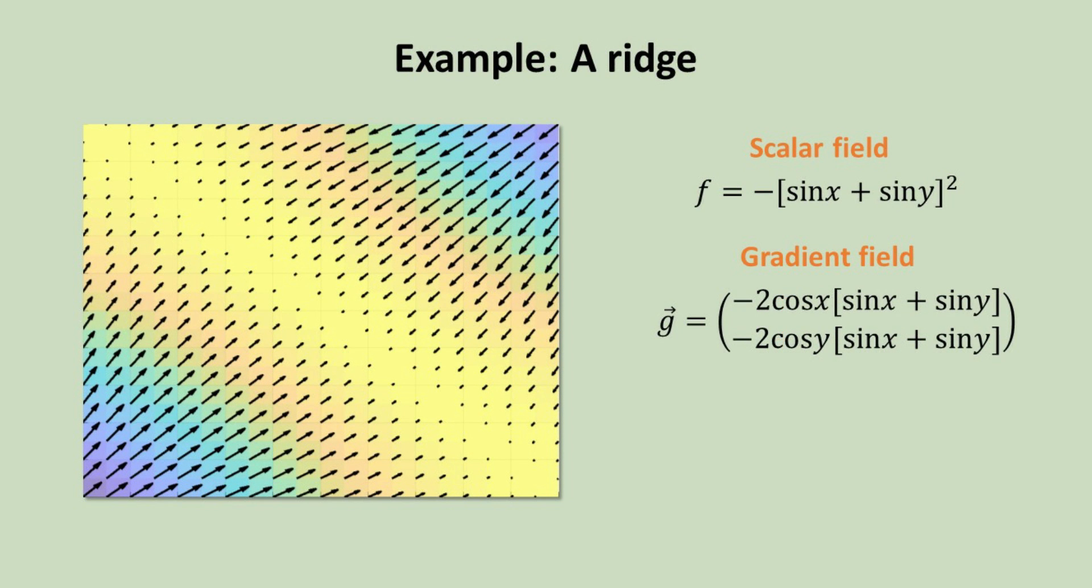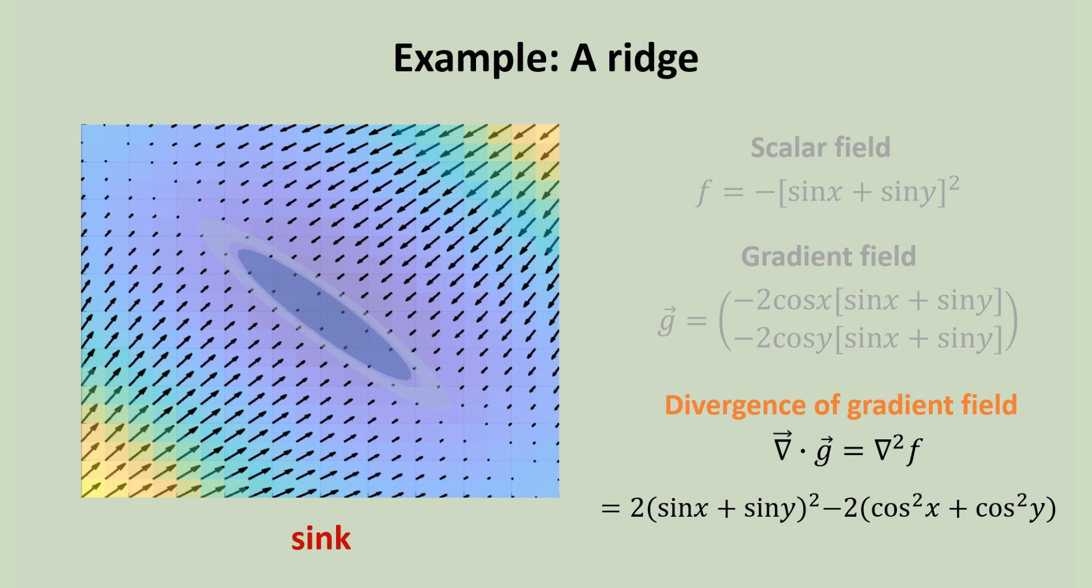Next, let's consider another scalar field, which describe a ridge. Again, the gradient field are pointing towards the ridge. The Laplacian of F indeed confirms that the extended ridge is a sink for the gradient field.